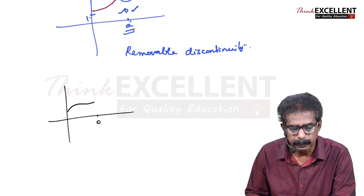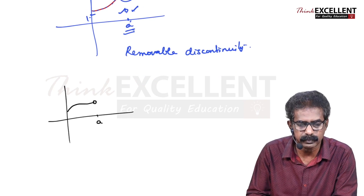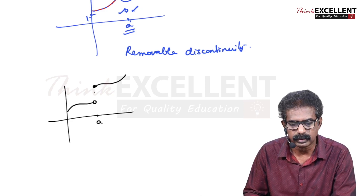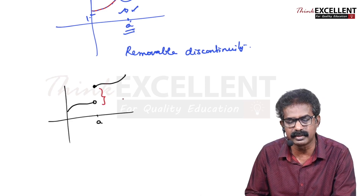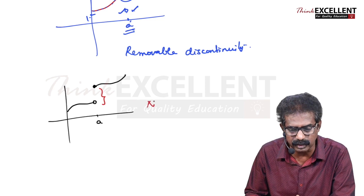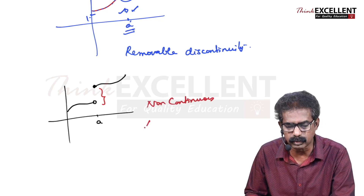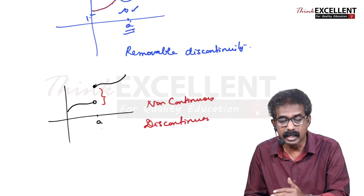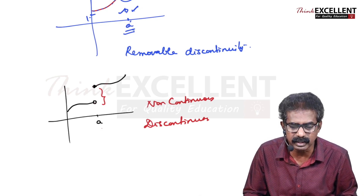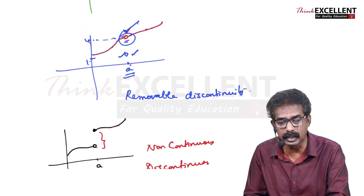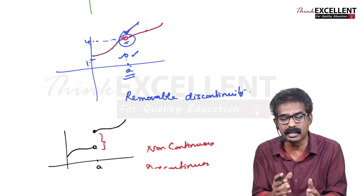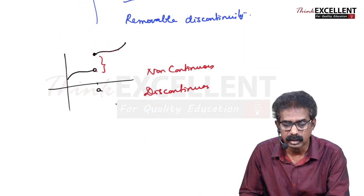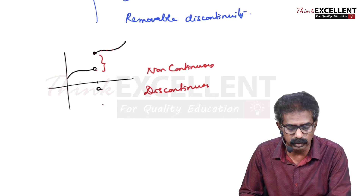But if you have a curve where at a particular point a there is a huge jump — before a the function has one value and after a it jumps to another value — then it is discontinuous. You cannot make it continuous by assigning a value at that single point, because the jump affects the surrounding behavior. This type of discontinuity cannot be removed.